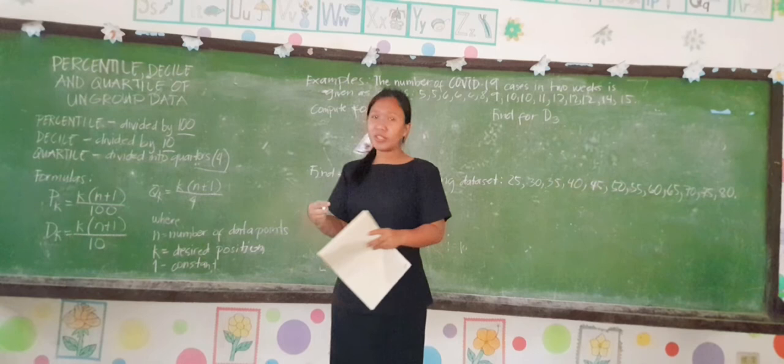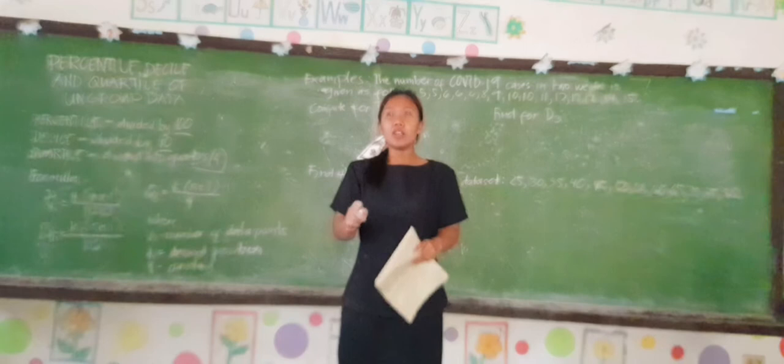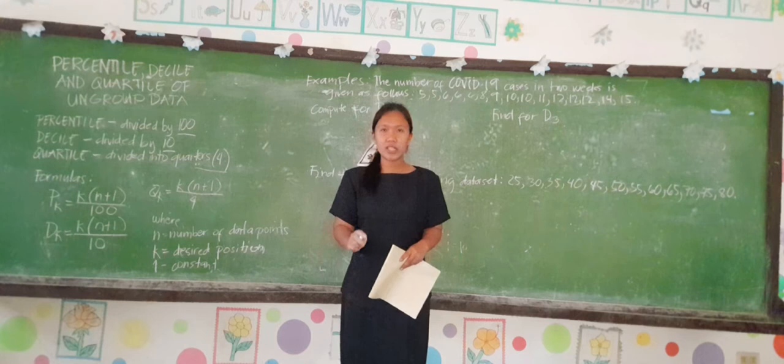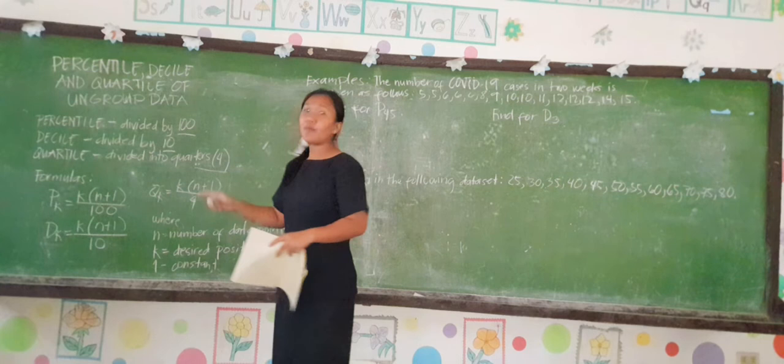Take note: when we are talking about percentile, the keyword is 'cent.' Cent means 100. For example, one century equals 100 years, and two centuries equal 200 years.